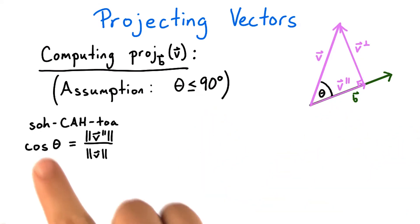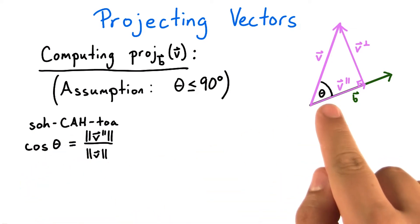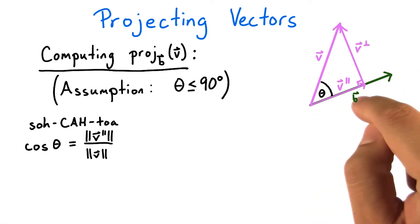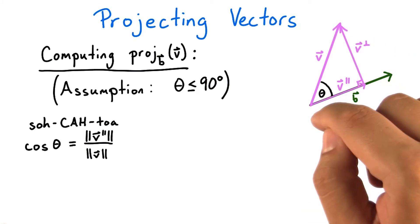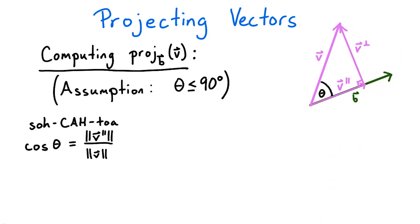If you remember SOHCAHTOA from trigonometry, remember that the CA means that the cosine of the angle of a right triangle is equal to the ratio of the adjacent edge to the angle and the hypotenuse. In other words, the cosine of theta is equal to the length of v parallel divided by the length of v.